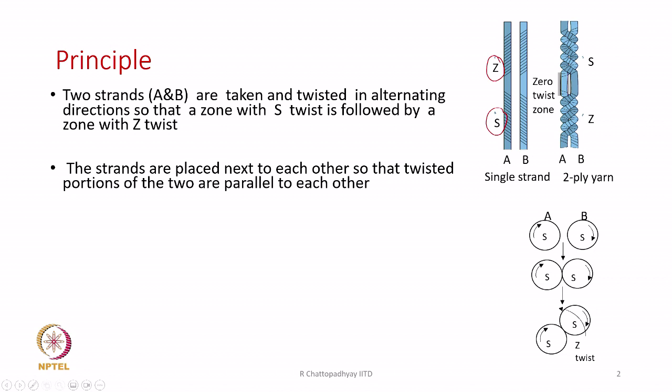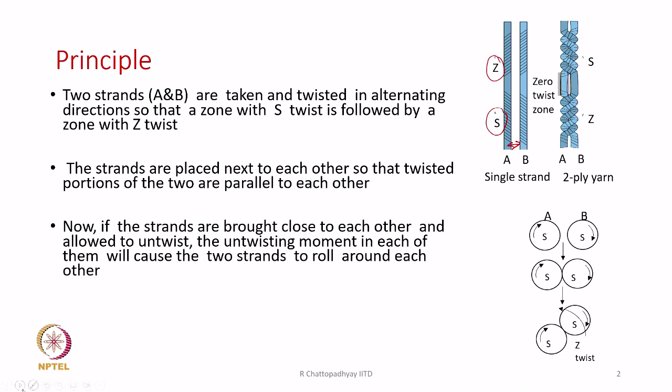Both yarns A and B have twist in alternating directions: S, Z, S, Z — some segments having S followed by Z, then again S followed by Z, and the same thing happens to the neighboring strand B. Now if the two strands are placed next to each other and the distance between them is removed, they are brought closer and allowed to untwist, because each individual strand has twist and there will always be an untwisting torque.